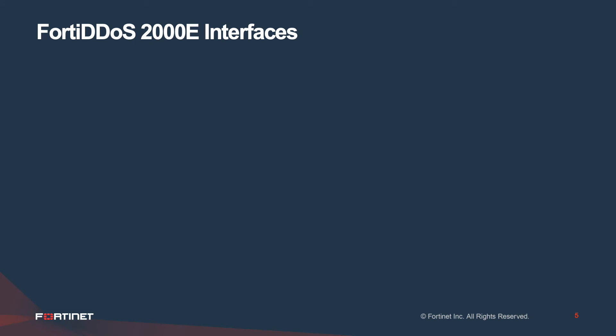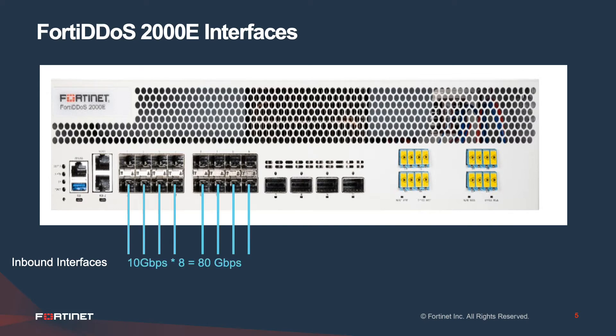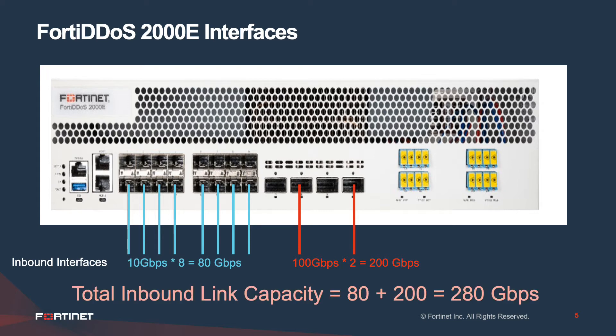It's important to understand how this works in terms of interfaces. The FortiDDoS 2000E has 8 x 10 Gbps interfaces making 80 Gbps, plus 200 Gbps interfaces, totaling 280 Gbps of inbound link capacity that can be mitigated with this appliance.